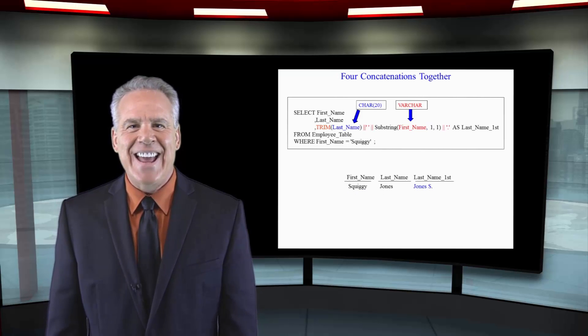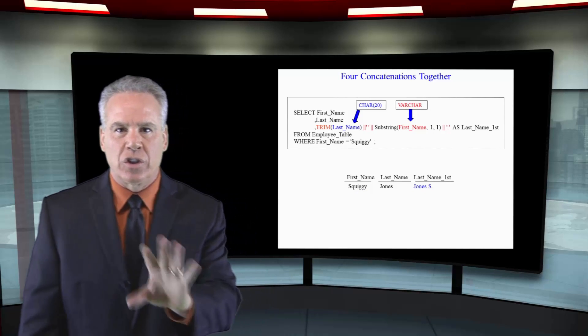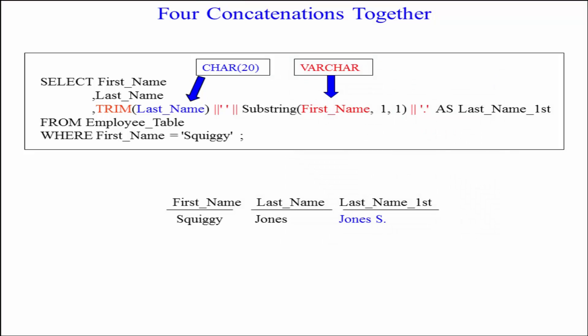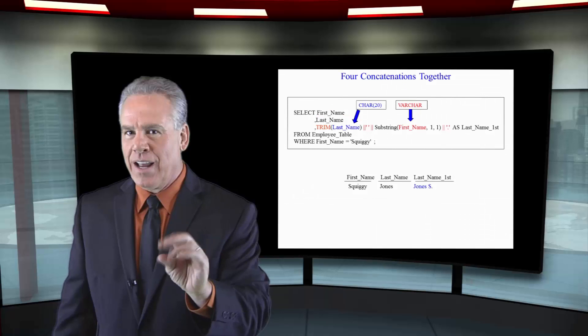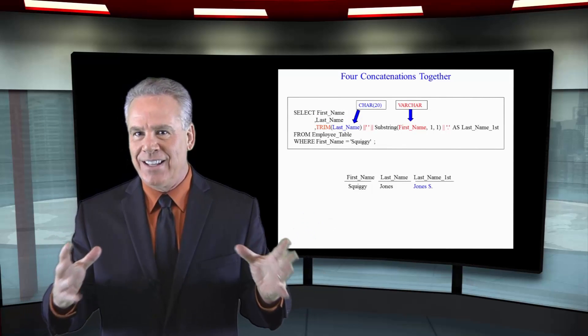Let's take it to the next level. Now watch this. Let's look at the report. I've got Squiggy, the first name, Jones, the last name, and then I've got Jones followed by a single space and then the first initial of the first name followed by a period.